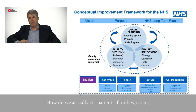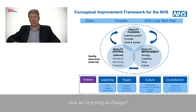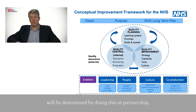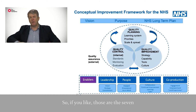The final piece, which I think is really important, is the co-production piece — how do we actually get patients, families, carers, and even communities involved in terms of the types of improvement we're trying to make? We know that moving to the next level will be determined by doing this in partnership. So creating co-production as an enabler for this framework — those are the seven key components of the framework.